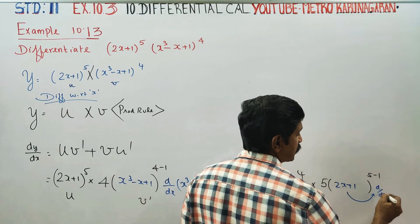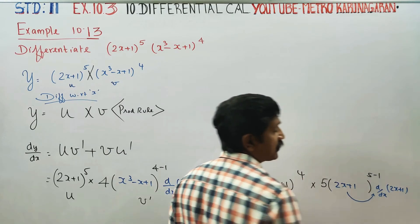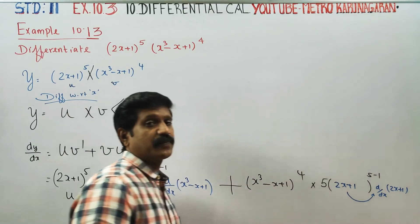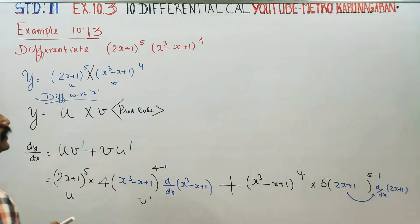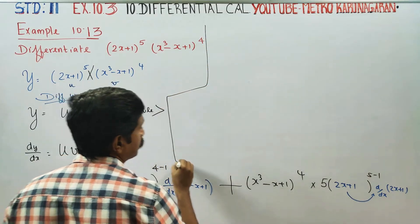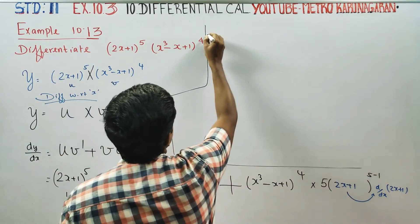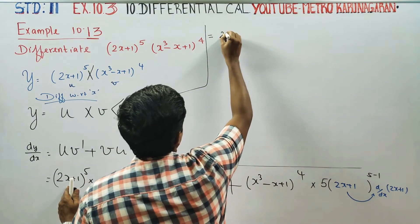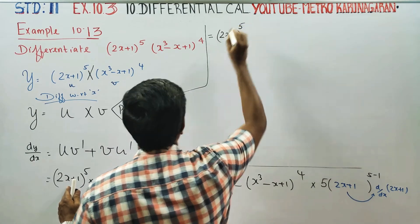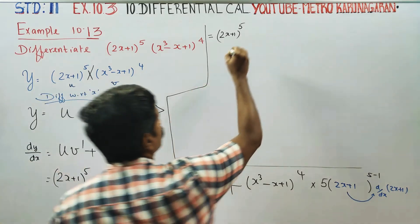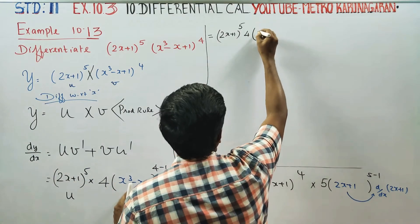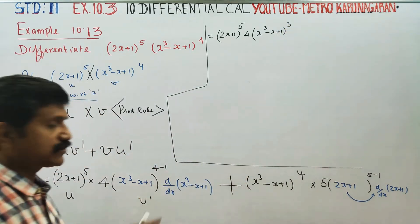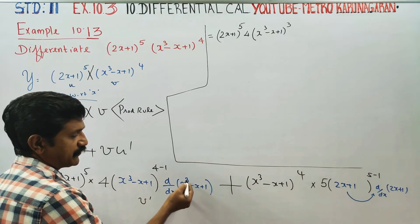Differentiating with respect to x using the chain rule, the main part of the sum leads to simplification. We get (2x plus 1) whole power 5, then 4 into (x cube minus x plus 1) whole power 3.